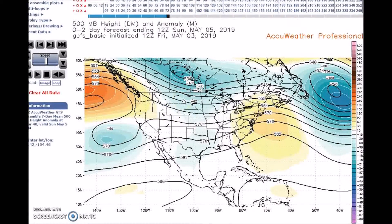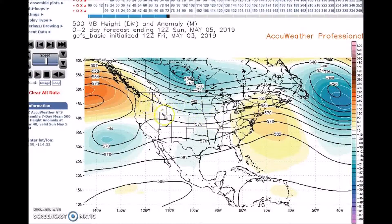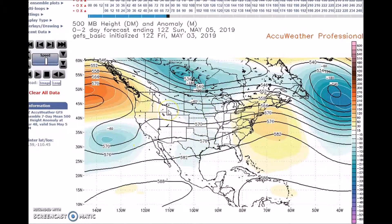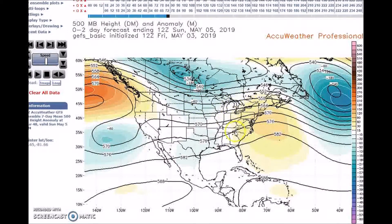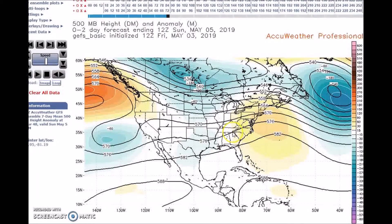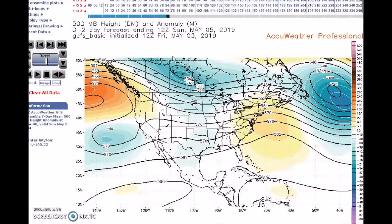We have a split flow across the nation — this is the southern stream, this is the northern stream — and we have a trough that extends into the northern states, with a zone of flow over the east and the plains.